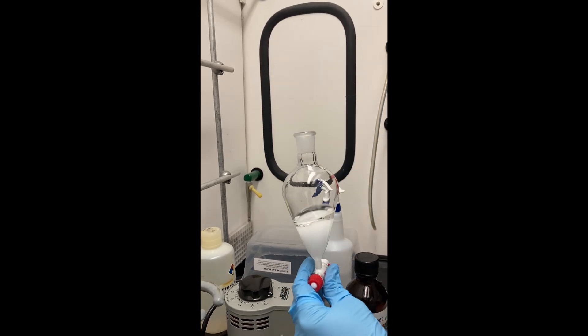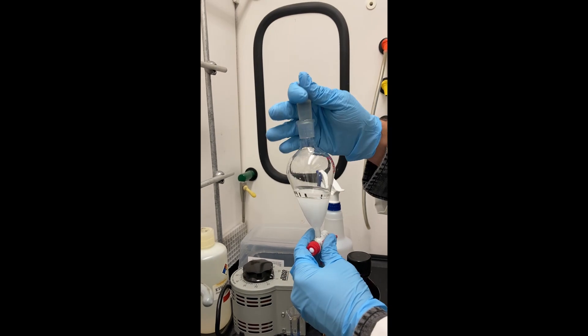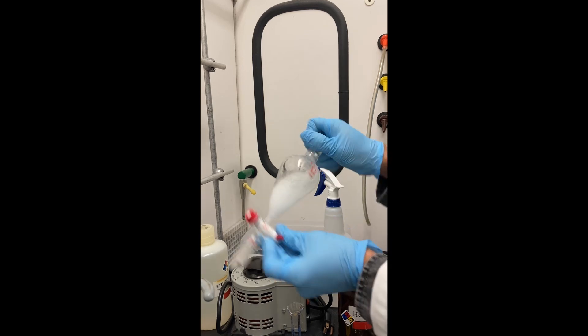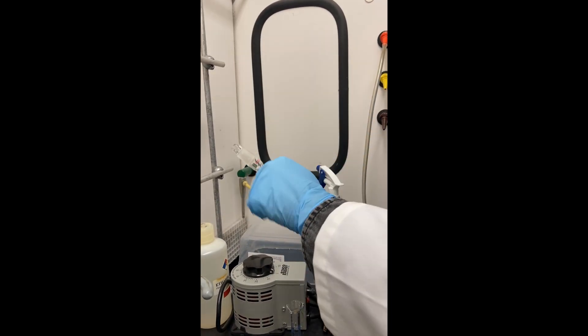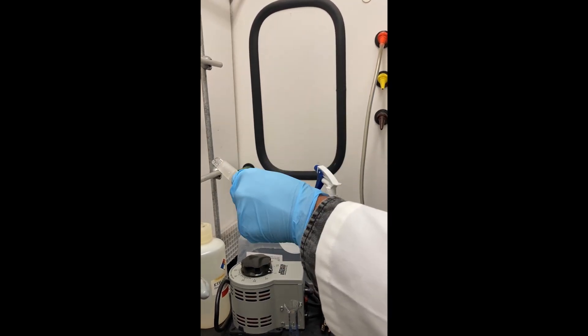For the next step, make sure that the stopper is attached securely to the separatory funnel and that you're venting the separatory funnel after inverting. This prevents a buildup of pressure which can cause harm to yourself or cause a mess. Notice how the separatory funnel is pointed away from the person using it and into the back of the hood.